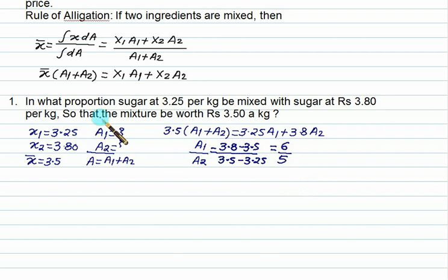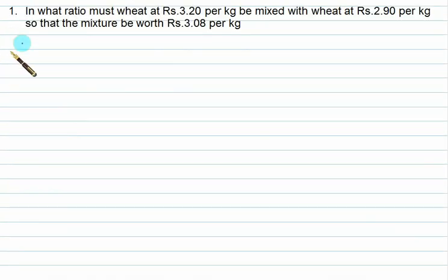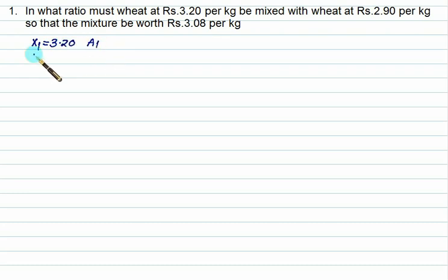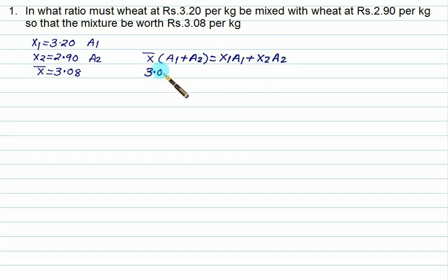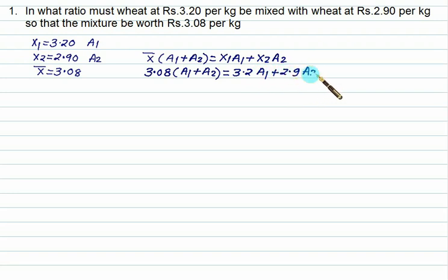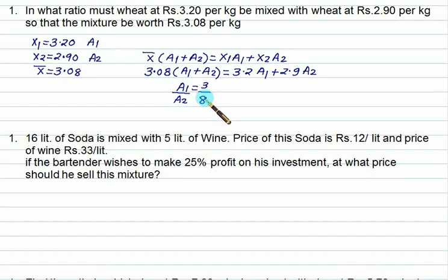Don't worry about which is cheap and in what ratio. Mixture price is x bar. Here x1 is 3.20, quantity is a1. x2 is 2.90, a2. Mean price is 3.08. So x bar into a1 plus a2 equals x1·a1 plus x2·a2, that is 3.08·(a1 plus a2) equals 3.2·a1 plus 2.9·a2. Separating variables gives a1 by a2 equal to 3 by 2.